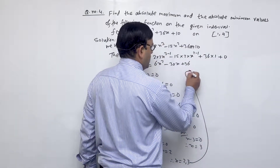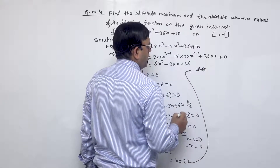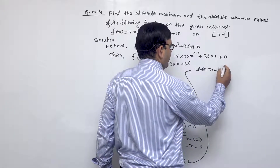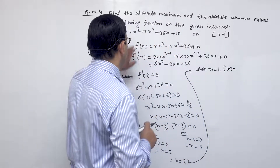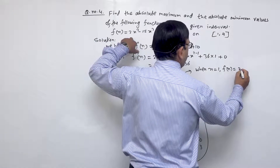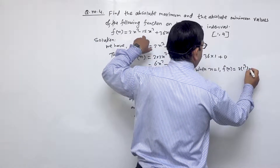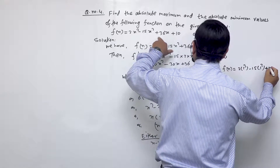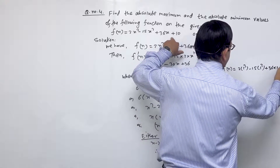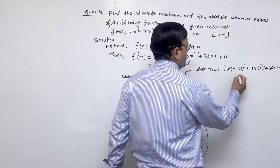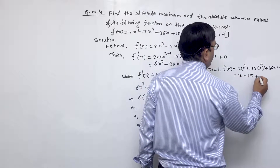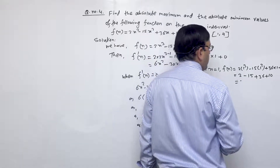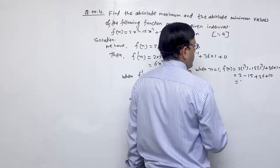Now when x = 1, f(1) = 2(1)³ - 15(1)² + 36(1) + 10 = 2 - 15 + 36 + 10 = 33.